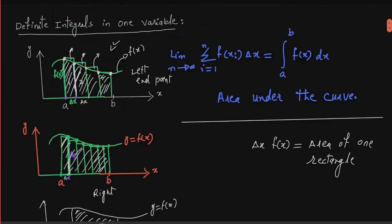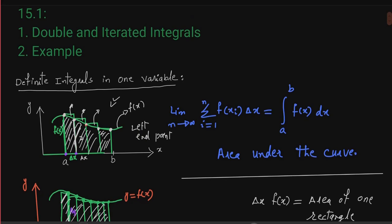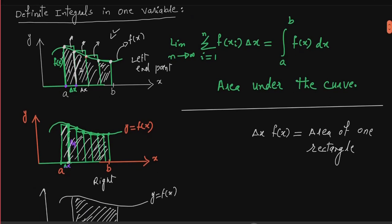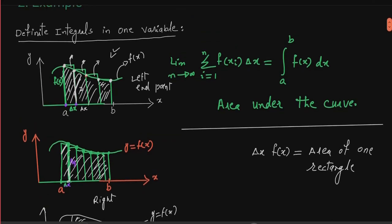The mathematical definition is: when the limit of n approaches infinity, the summation of f(xᵢ)·Δx equals the definite integral from a to b of f(x) dx. This is the area under the curve — this is the single variable definite integral.